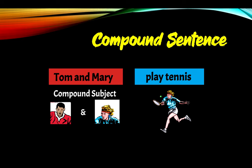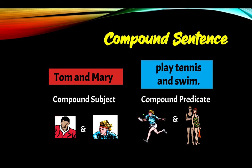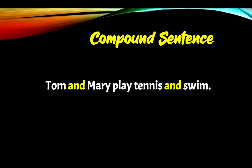What happens if we have two subjects, like Tom and Mary? That's a compound subject. What happens if we have two verbs, like play tennis and swim? That's a compound predicate, because we have two. So compound subject: Tom and Mary. Compound predicate: play tennis and swim. Notice that we have and — so Tom and Mary play tennis and swim.